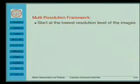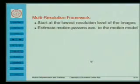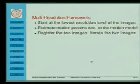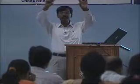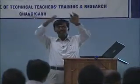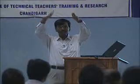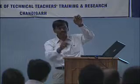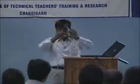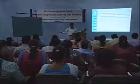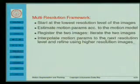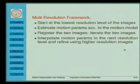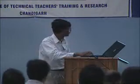The idea is as follows: we start at the lowest resolution level. We estimate the motion parameters according to whatever motion model we have — say, translation. After that, we register the two images. At the lowest resolution the signal has fewest pixels; from there we establish correspondences — if two pixels correspond at low resolution, perhaps four pixels correspond at higher resolution, giving a more accurate estimate. We iterate over the two images, interpolate the motion parameters to the next resolution level, and refine using higher-resolution images, going from the lowest level to the highest level.